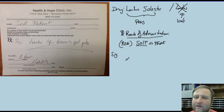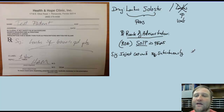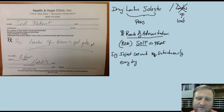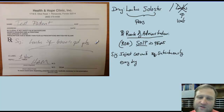Let's look at the SIG: Inject 60 units subcutaneously every day right before bedtime. QD means every day and QHS means at bedtime. Dr. Hamm wrote this to emphasize consistency with long-acting insulins — you don't want to take one at 10 AM one day and 7 PM the next, because these are designed to last approximately 24 hours.